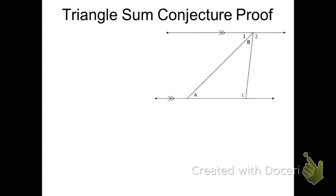The first thing I can tell from looking at this picture is that angle 1 plus angle 2 plus angle B add up to 180 degrees. Because by looking at the picture, the two sides that are not touching the other two angles form a straight line, and we know that straight angles are 180 degrees. So angle 1 plus angle 2 plus angle B add up to 180.